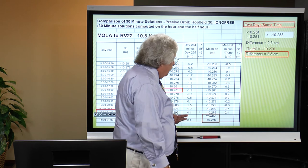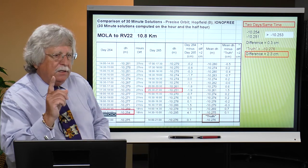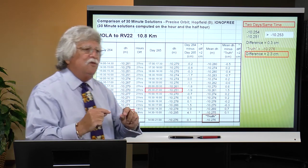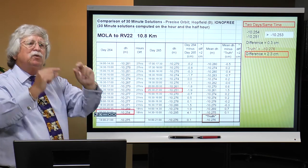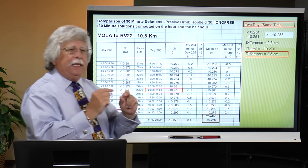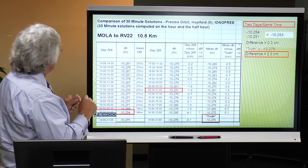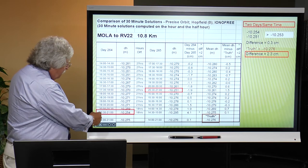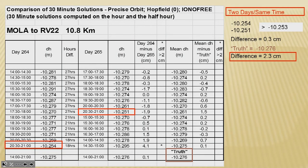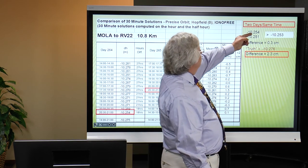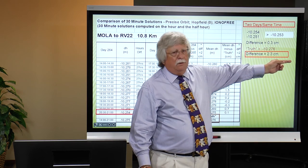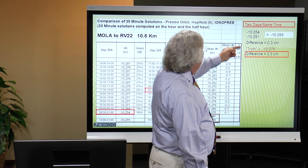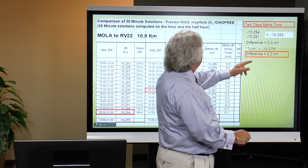NGS then went back and reprocessed each of the two sessions as individual half-hour solutions to see what you get with just half an hour's worth of data. On day 264, a session from 8:30 to 9:00 at night gives one height difference. The same timeframe on the second day gives another. The two differ by only three millimeters — almost everybody would say that's golden, I'm good to go. But how do those two compare with the truth? 2.3 centimeters. Not bad — most people could live with that. That's quite good.